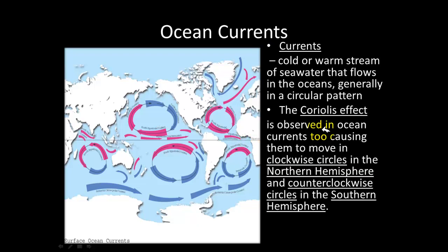The Coriolis effect is what affects the ocean currents. It causes them to move counterclockwise in the southern hemisphere and clockwise in the northern hemisphere. Commit that to memory: the Coriolis effect causes ocean currents to move counterclockwise in the southern hemisphere and clockwise in the northern hemisphere.